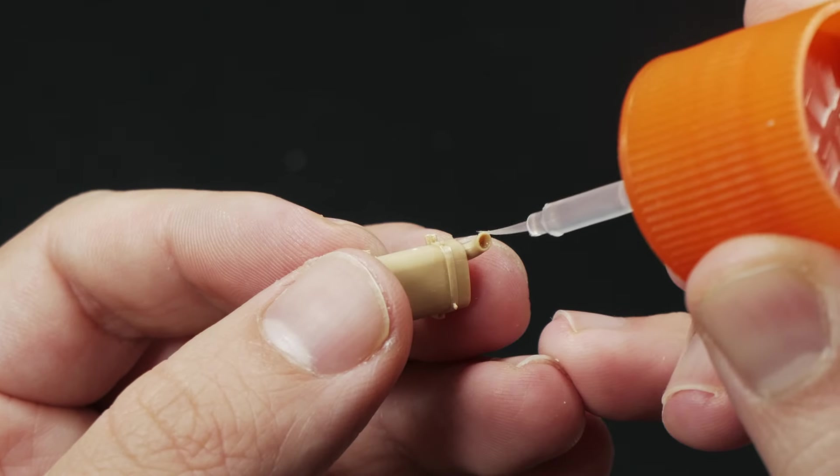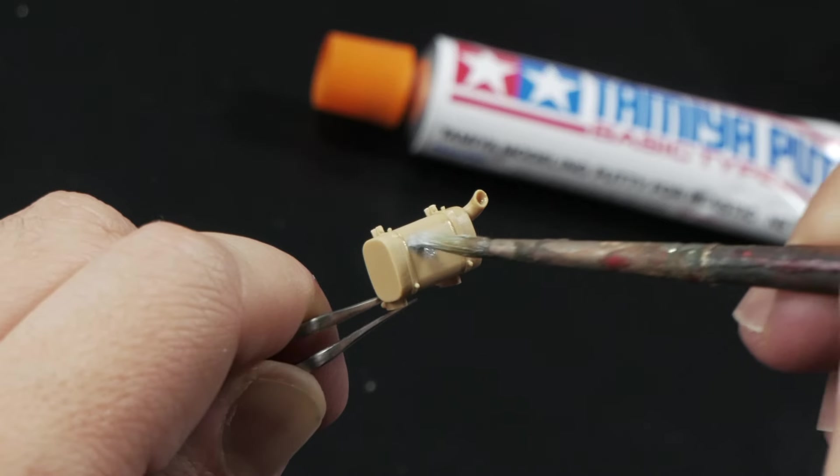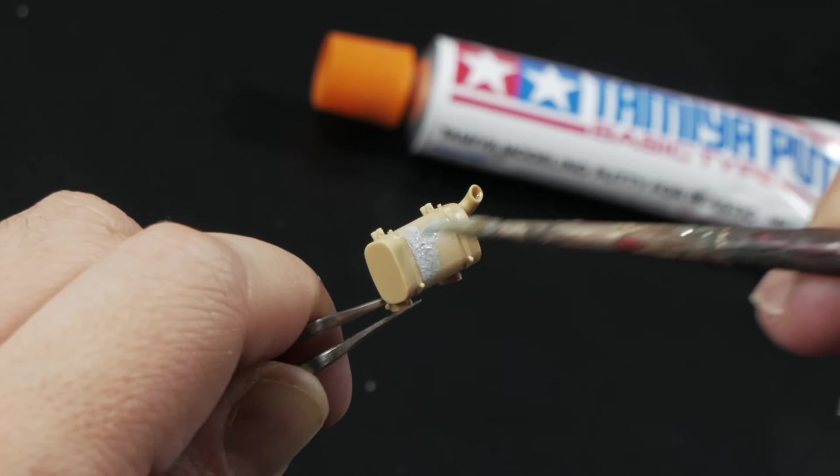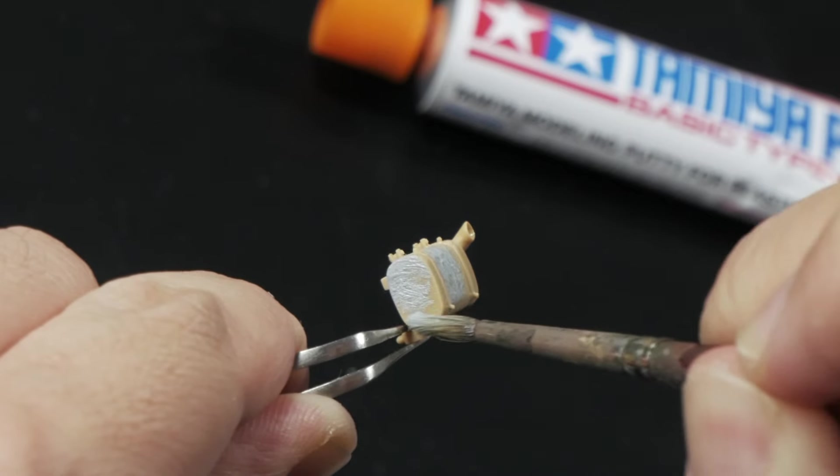But here in the rear area, there are also some interesting details to work with. I hollowed the exhaust pipe and textured the entire piece using some Tamiya putty diluted with some acetone and an old brush.